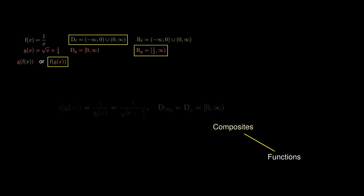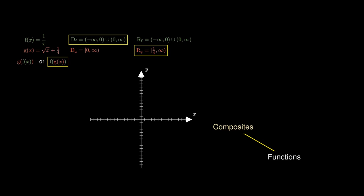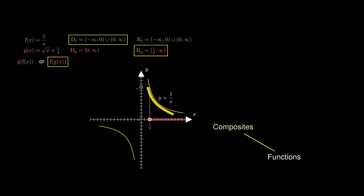To find the range of the composite function, we take the range of the inner function — the real numbers greater than or equal to a quarter — and plug it into the function to collect the outputs. This gives us the range of the composite function as the real numbers strictly greater than 0 and not more than 4.